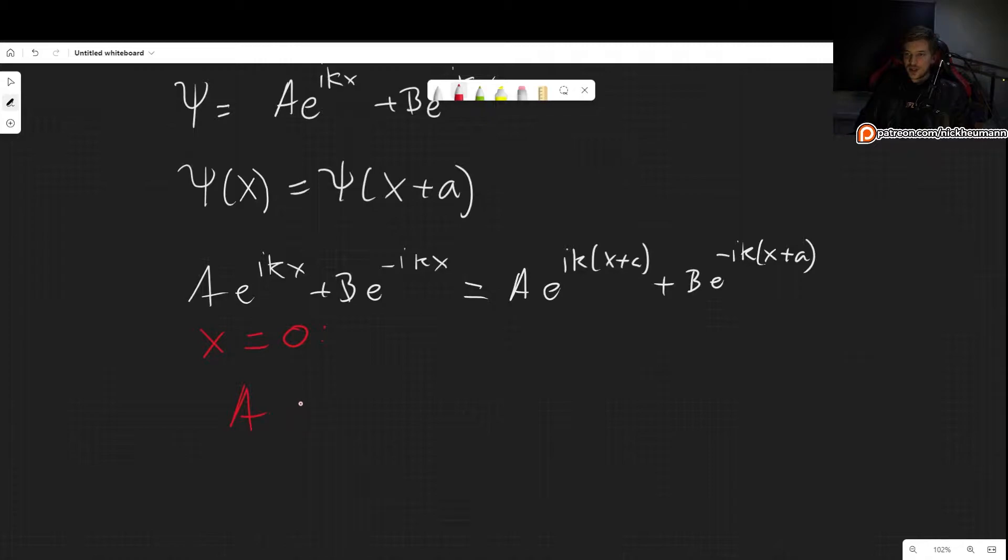At x equals zero, we get A + B is equal to Ae^(ika) + Be^(-ika).